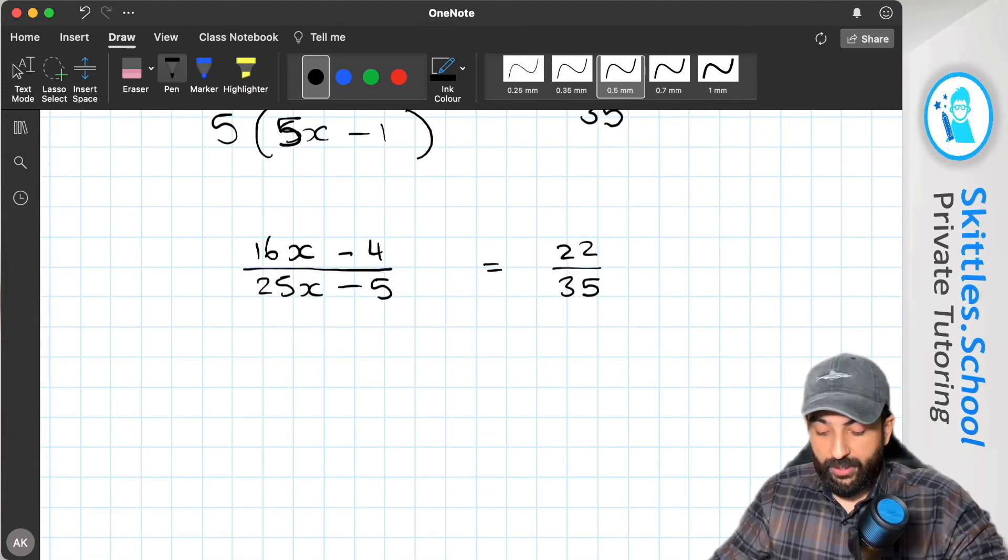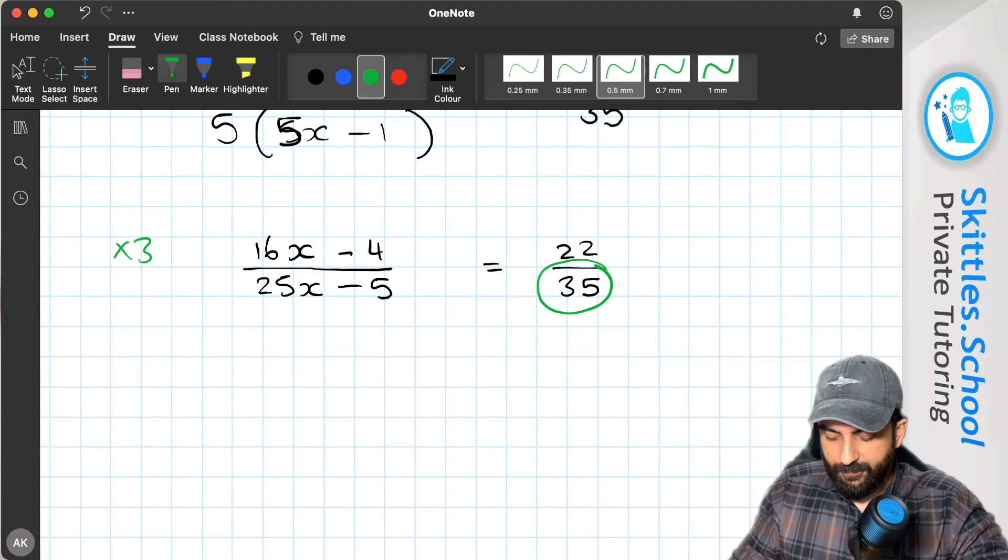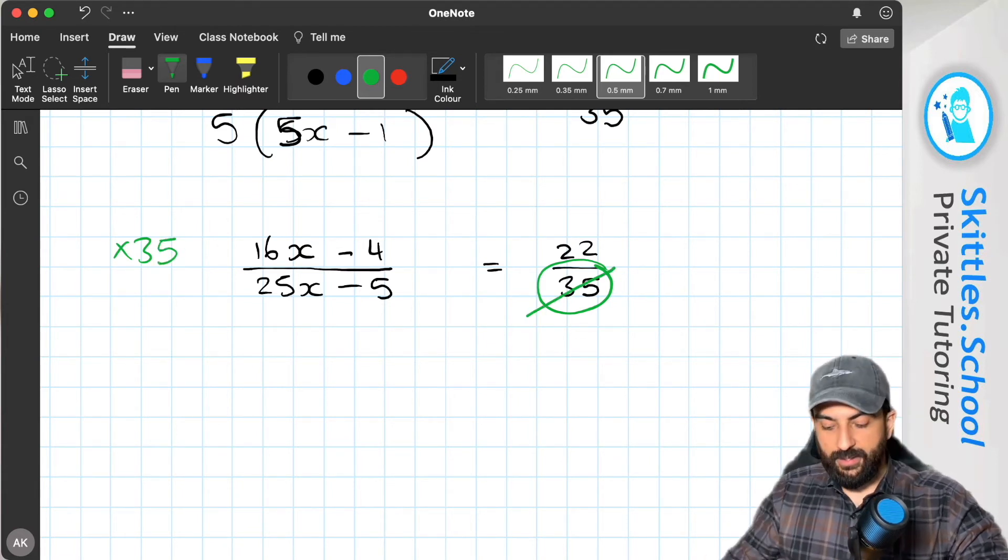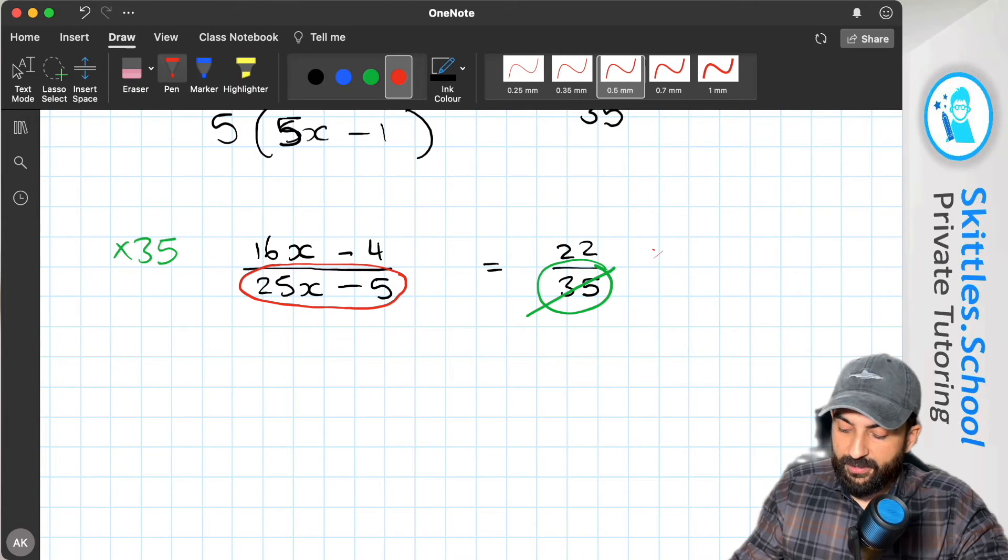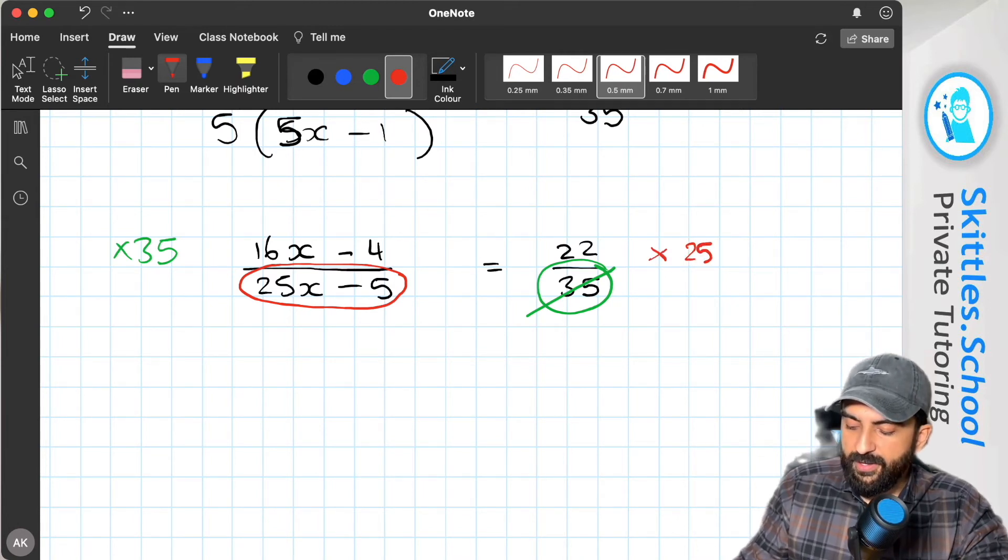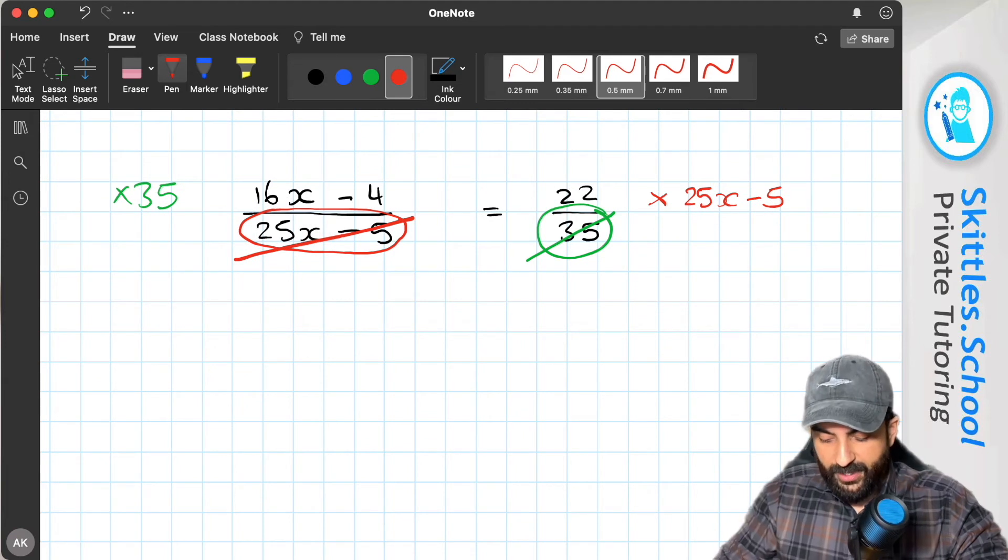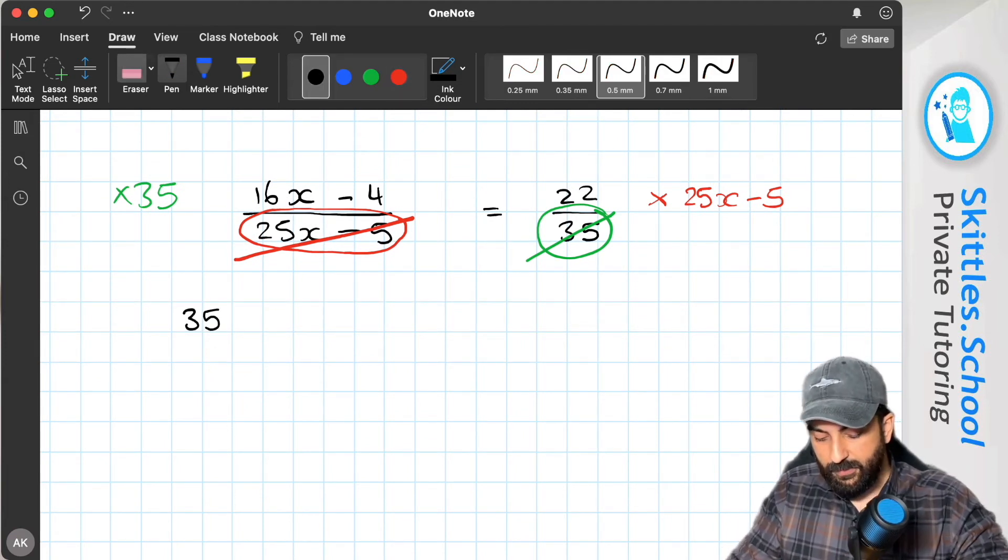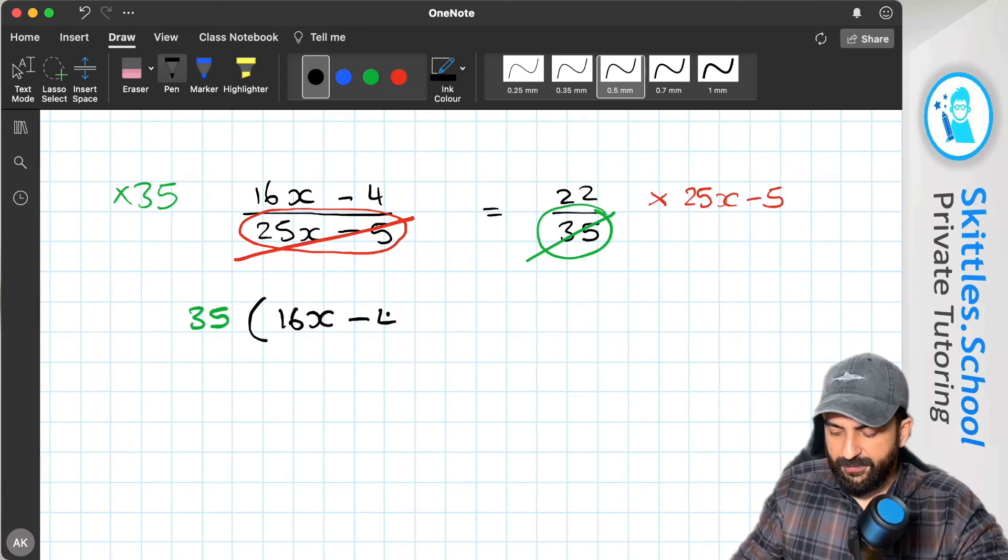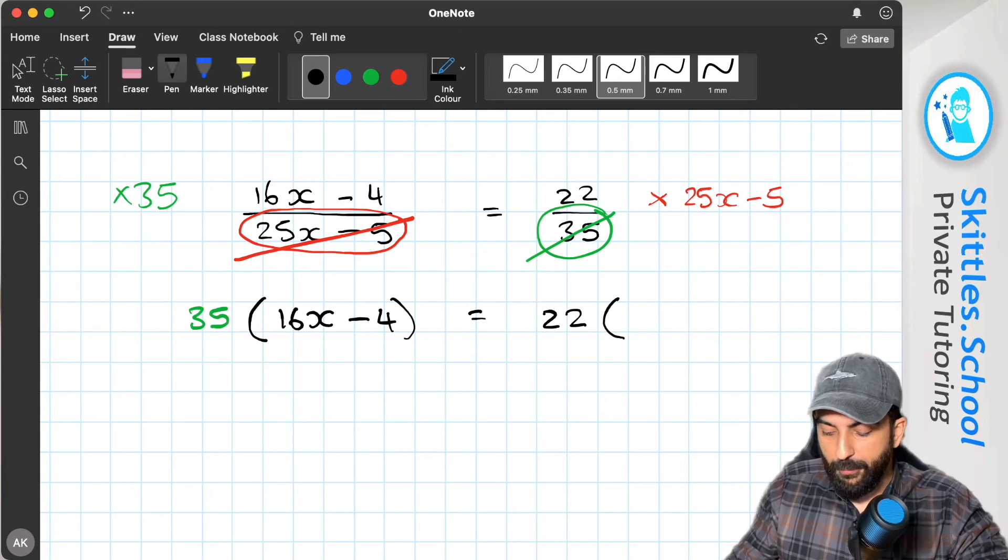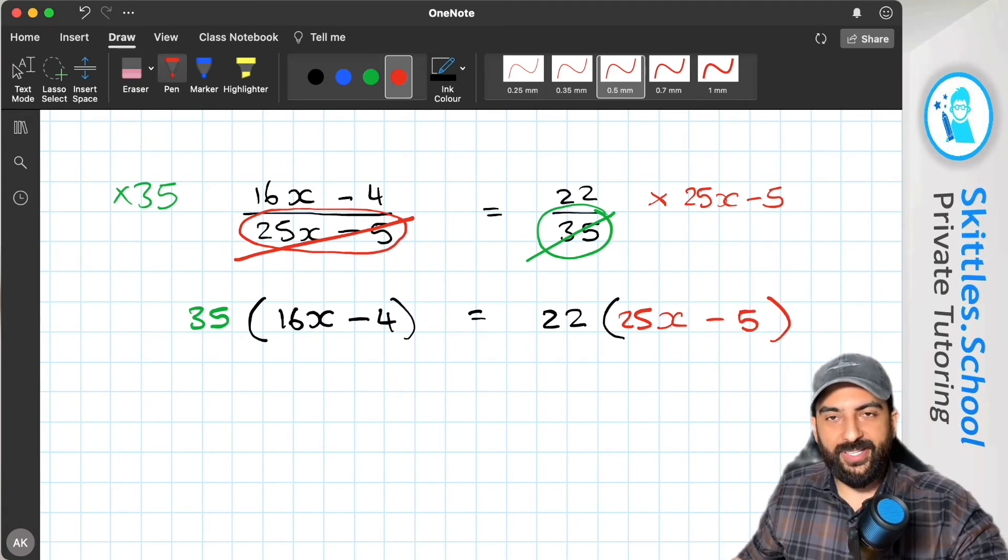Okay, now we can do some more algebra. If we multiply both sides by 35, that eliminates the 35 here. Then, if we multiply both sides by 25x minus 5, so times 25x minus 5. That eliminates it from here. And now we can work those out. So what have we got? We've got 35 brackets 16x minus 4. And we've also got 22 brackets 25x minus 5. Now we can expand them and work them out.